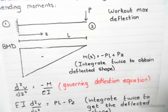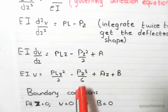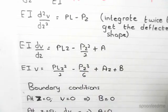At a cantilever, our deflection is zero. So if we substitute z = 0 and v = 0 into this equation, we find immediately that B = 0.